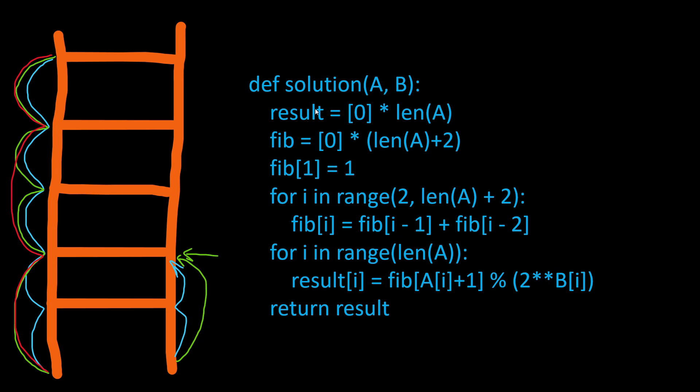So first we are declaring a result list. It's going to be full of zeros of the same length of A. And then we have the Fibonacci numbers that we are going to store in a list. For the moment it's empty. Its size is length of A plus two. Then the second Fibonacci number is equal to one. And from here for these two lines we are computing simply the Fibonacci numbers, making the sum of Fibonacci[i-1] plus Fibonacci[i-2].